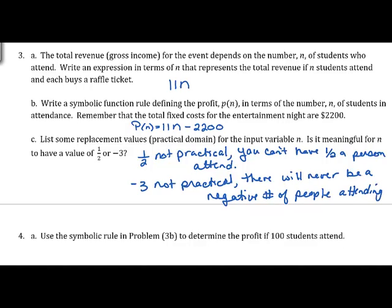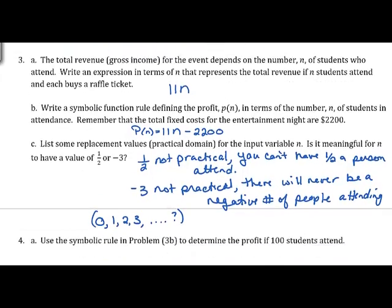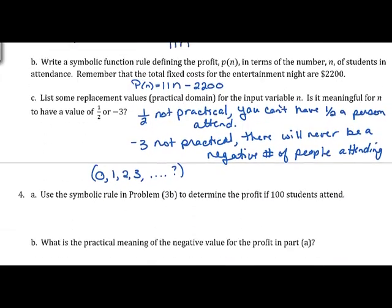Worst case scenario is that nobody attends. So the practical domain starts at zero and goes up: 0, 1, 2, 3, and so on. The upper bound would depend on how many students could attend.